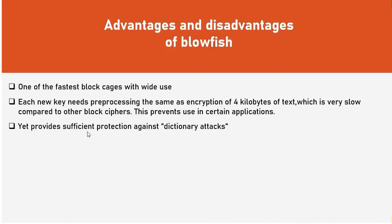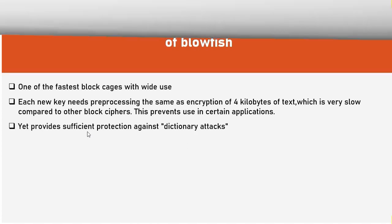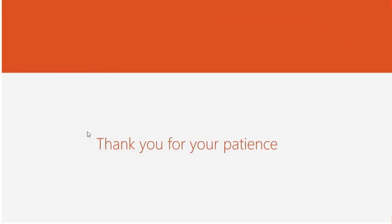Finally, advantages and disadvantages of Blowfish. One of the fastest block ciphers with wide use. Each new key needs pre-processing the same as encryption of 4KB of text, which is very slow compared to other block ciphers. This prevents use in certain applications yet provides sufficient protection against dictionary attack. So this is the end of my presentation. Thank you for your patience.